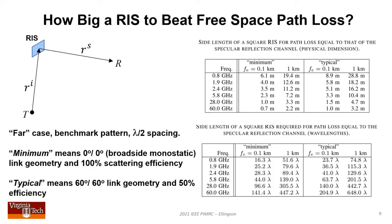Now we calculate the size required to yield path loss equal to free space. Parameterizing in terms of effective focal length, where the RIS is placed doesn't matter. All that matters is frequency, effective focal length, and link geometry. I consider two cases: perfect scattering with monostatic geometry minimizing path loss, and a typical case with 60-degree angles from normal and 50% scattering efficiency giving larger required area.